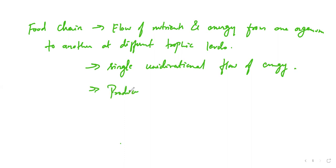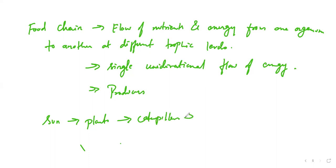This starts with the producer — the producers are the starting point. If you want to draw a food chain: from the sun to the plants, some plants or flowers are eaten by small creatures like caterpillars, then frog, then snake, then birds. You can see how the energy is getting transferred from the sun to the last one, which is the birds.